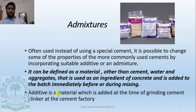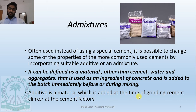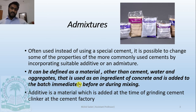On the other hand, an additive is a material which is added at the time of grinding the cement clinker at the cement factory. For example, gypsum is added during clinker grinding to prevent the flash setting of cement. The basic difference is that admixtures are added immediately before or during mixing, while additives are added at the time of cement grinding.